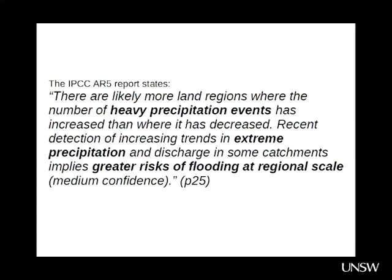The IPCC AR5 report states that there are likely more land regions where the number of heavy precipitation events has increased than where it has decreased. Recent detection of increasing trends in extreme precipitation and discharge in some catchments implies greater risks of flooding at regional scale. So although our climate model projections of the future climate are based on mean rainfall, we definitely have some hints coming through in the IPCC reports about extreme rainfall. And generally when we're talking about extreme rainfall, we're talking about convective events.